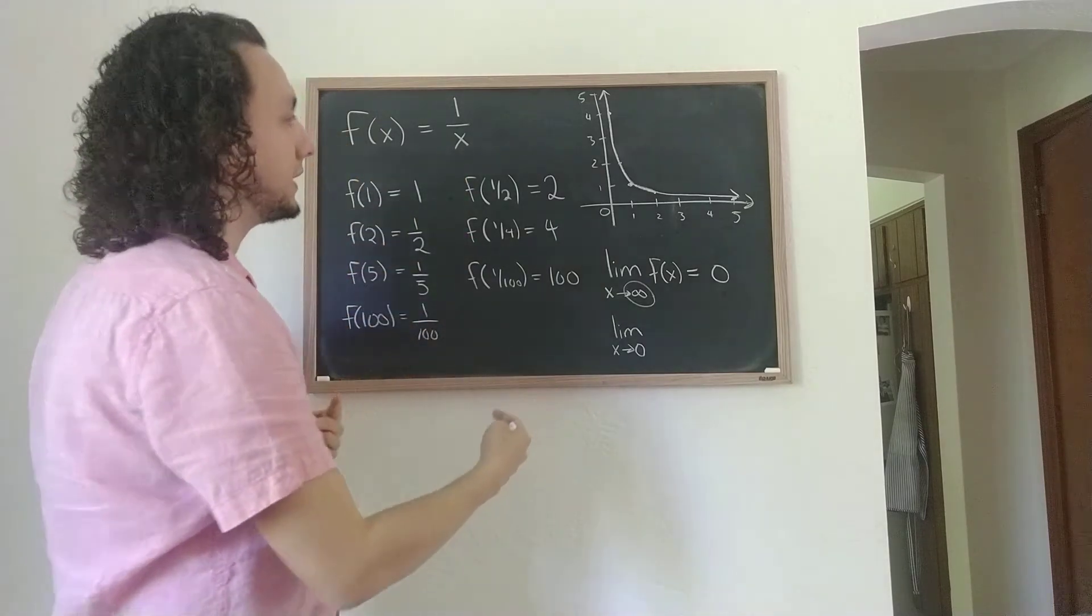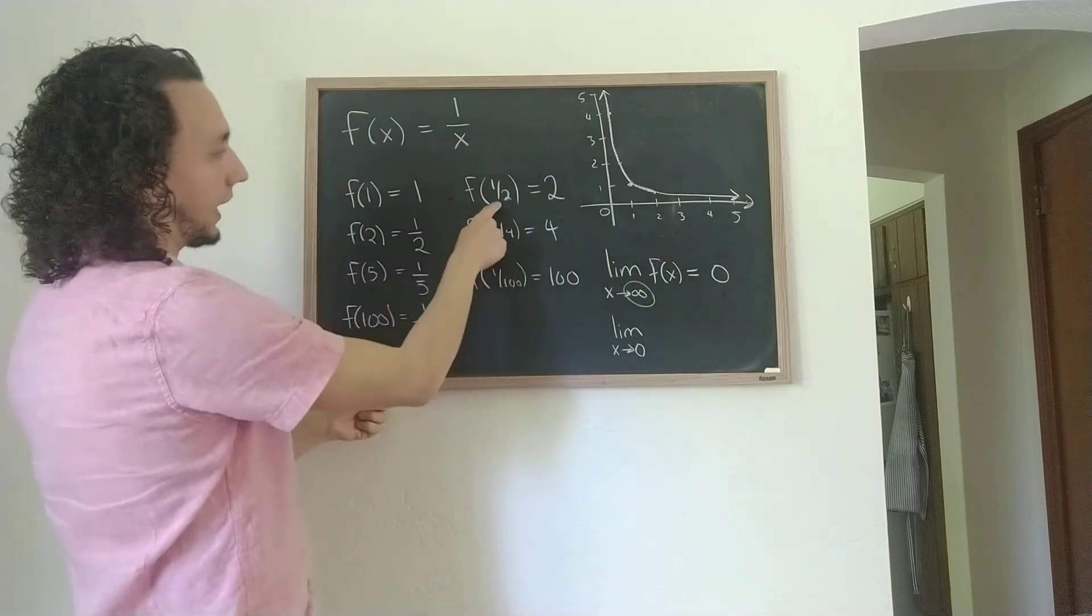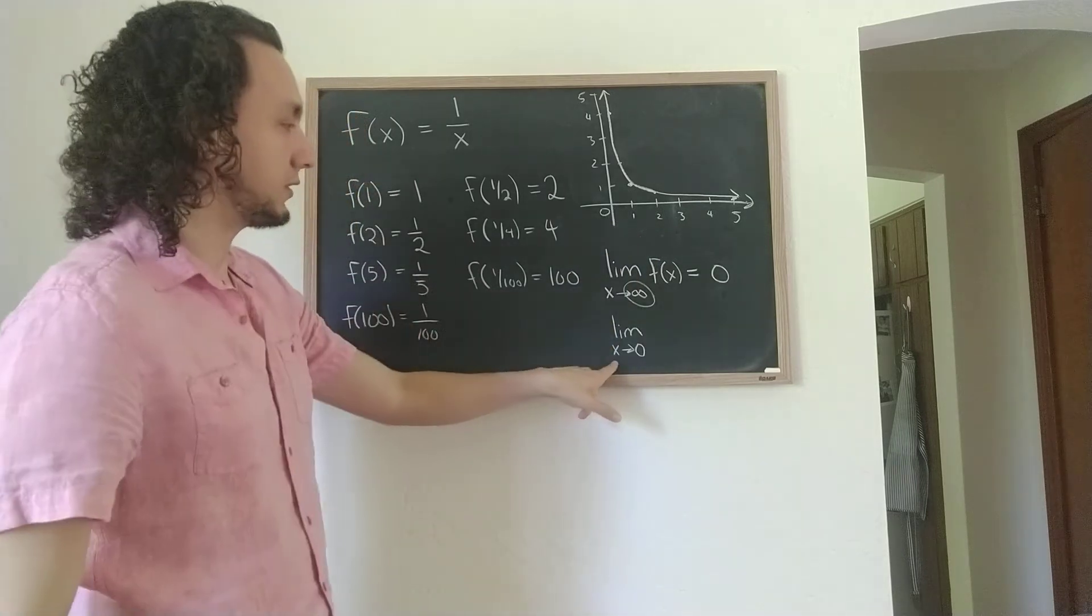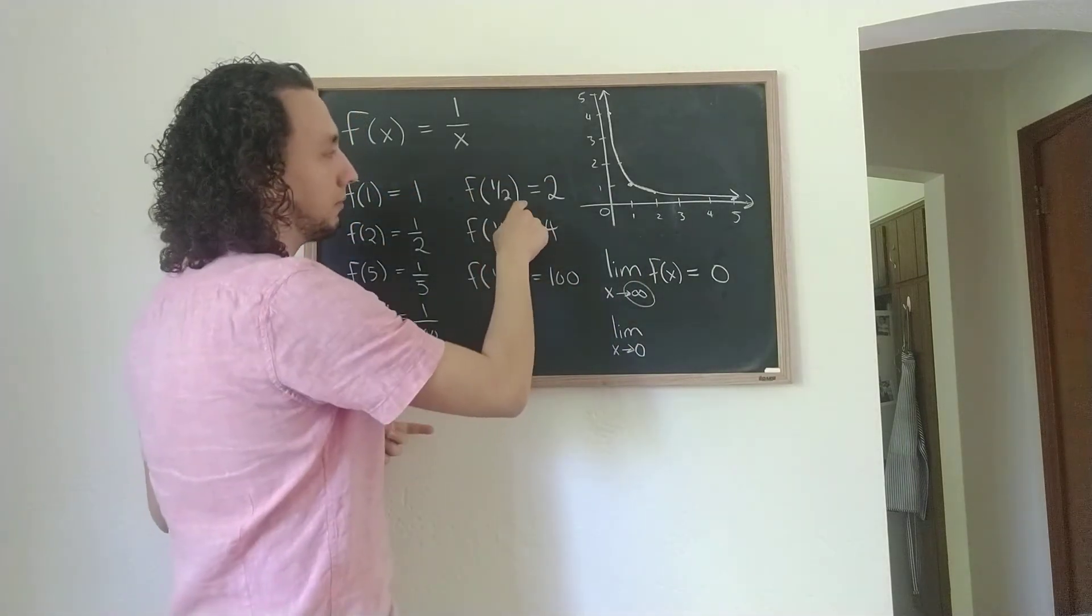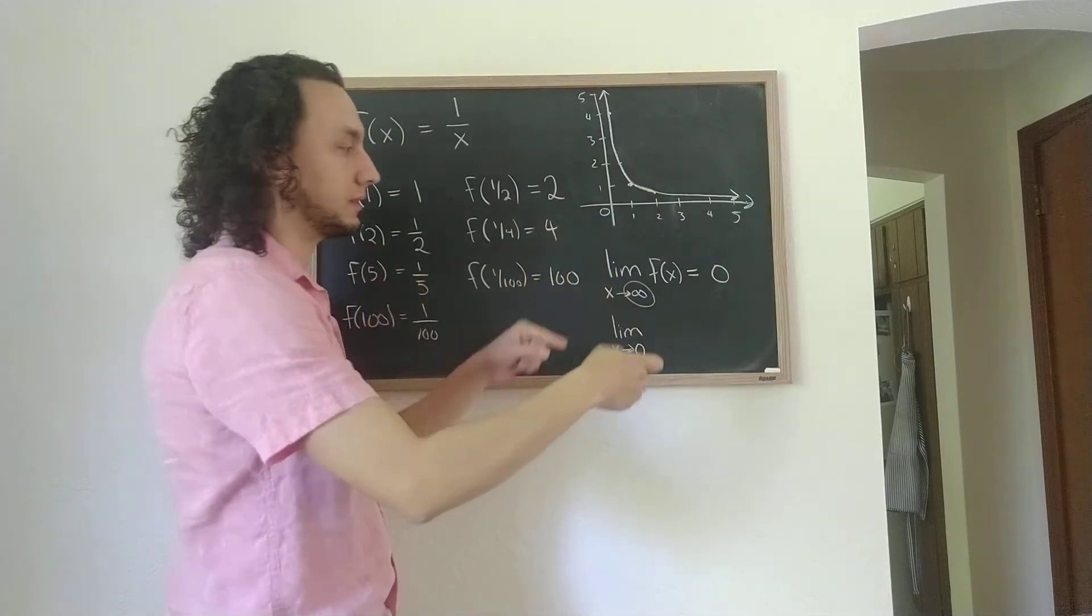Technically, I have to distinguish between going to 0 from the right-hand side, like here, a half, a quarter, one over 100. That's getting smaller and smaller in positive numbers, versus getting smaller and smaller, but from the negative side, like minus 2, minus a half, minus a tenth, and so on. That's another way of going to 0.